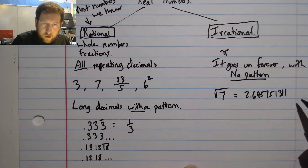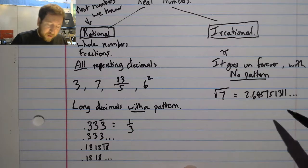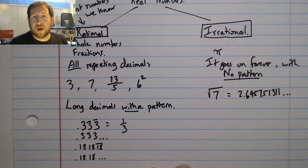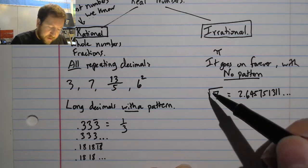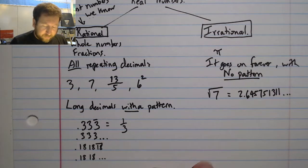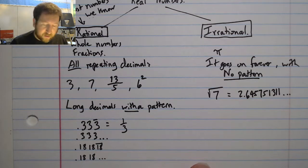2.645751311, and I can say that this does go on forever. However, there's no pattern that's been established, so it just goes on forever randomly. So the square root of 7 is an irrational number. In fact, any square root that isn't a perfect square is irrational.